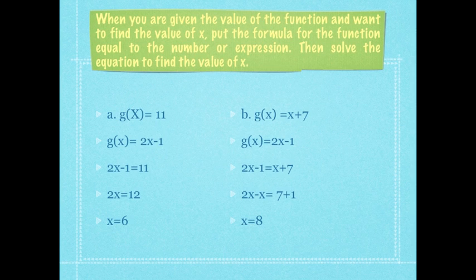g of x equals to 11 and g of x equals to 2x minus 1. Hence, 2x minus 1 equals to 11, so x equals to 6. For g of x equals to x plus 7 and g of x equals to 2x minus 1, hence 2x minus x equals 7 plus 1, and x equals to 8.